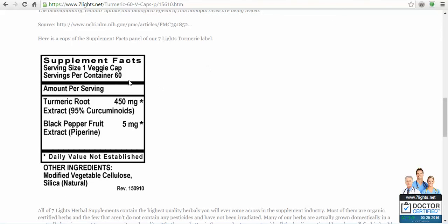Okay, and here's the supplement facts on it. One capsule has turmeric root extract 450 milligrams, 95 percent curcuminoids, along with black pepper fruit extract, which is piperine, 5 milligrams. I would highly recommend that you take one to three capsules probably twice a day.